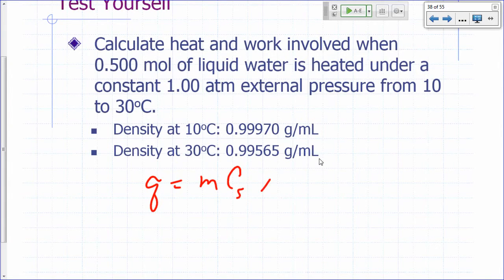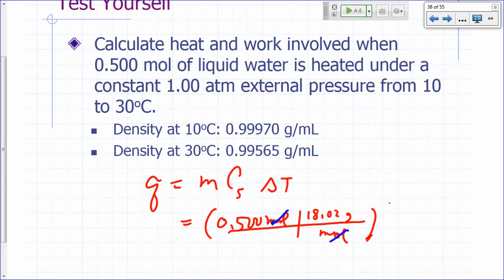Mass times specific heat times delta T. What's the mass of water here? 0.500 mole. How do you change that to grams? 18.02 grams per mole. Mole cancels out.